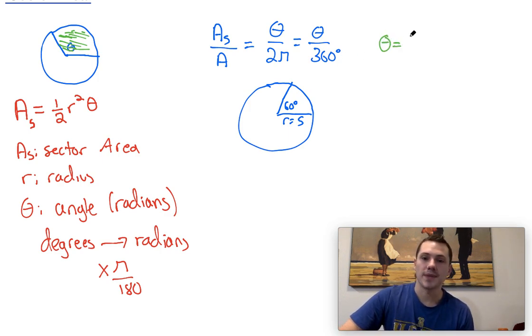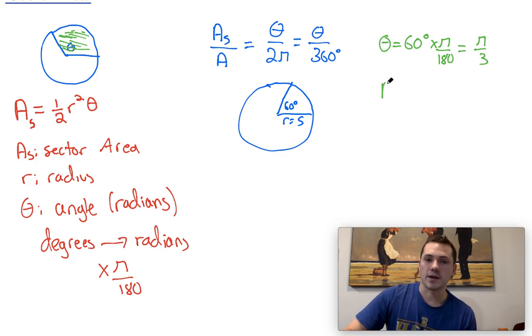So what I'm going to do is I'm going to say theta is equal to 60 degrees times pi over 180. And when I do that conversion, I'm going to end up getting pi over 3. Now that I know theta is pi over 3, I can go ahead and plug it into the sector area formula, where the area of the sector is equal to 1 half times 5 squared times pi over 3.